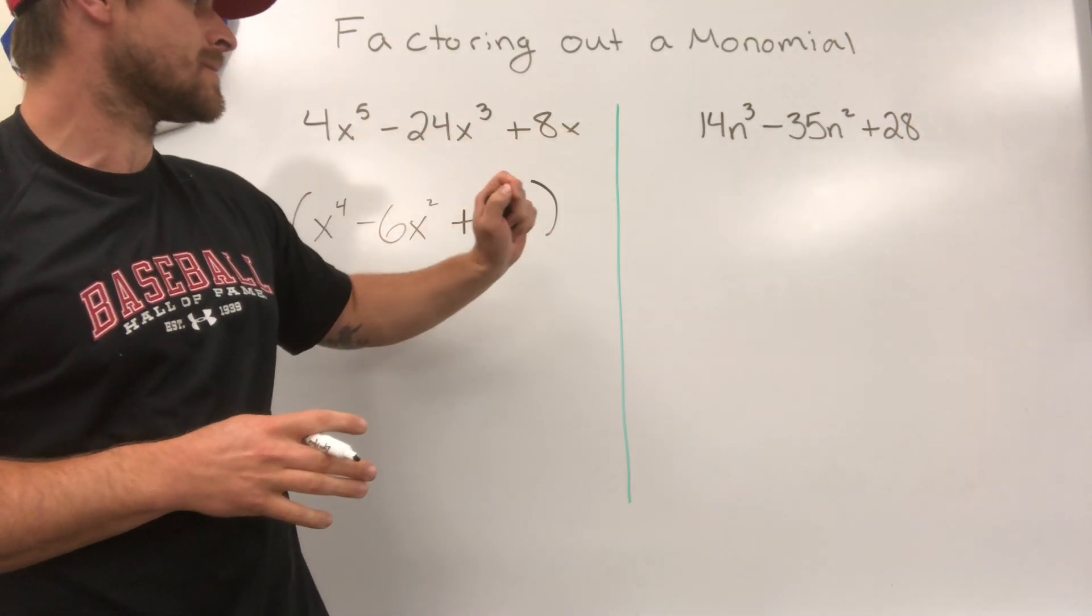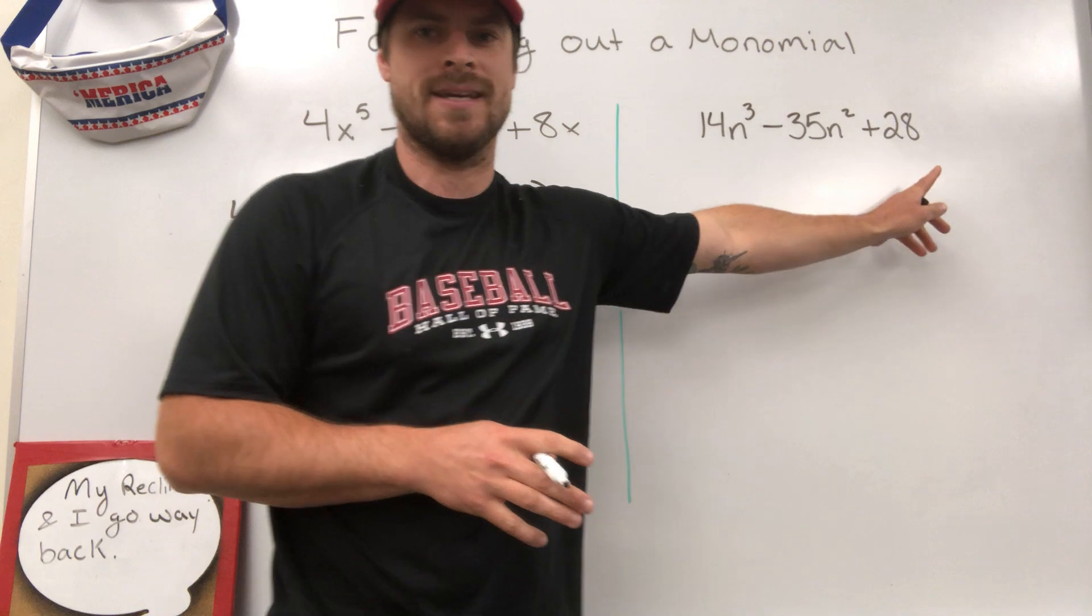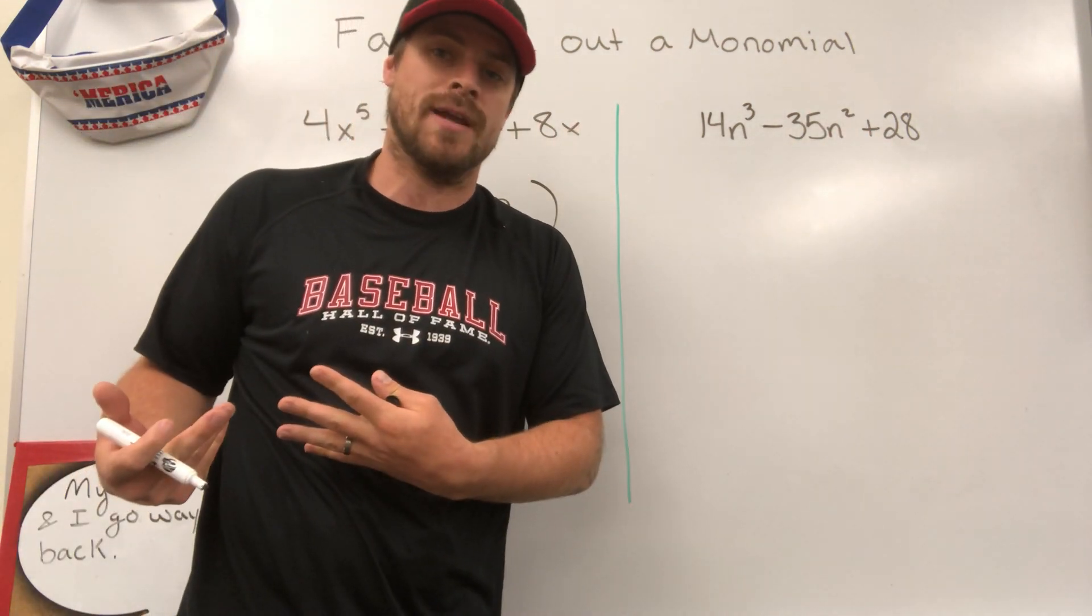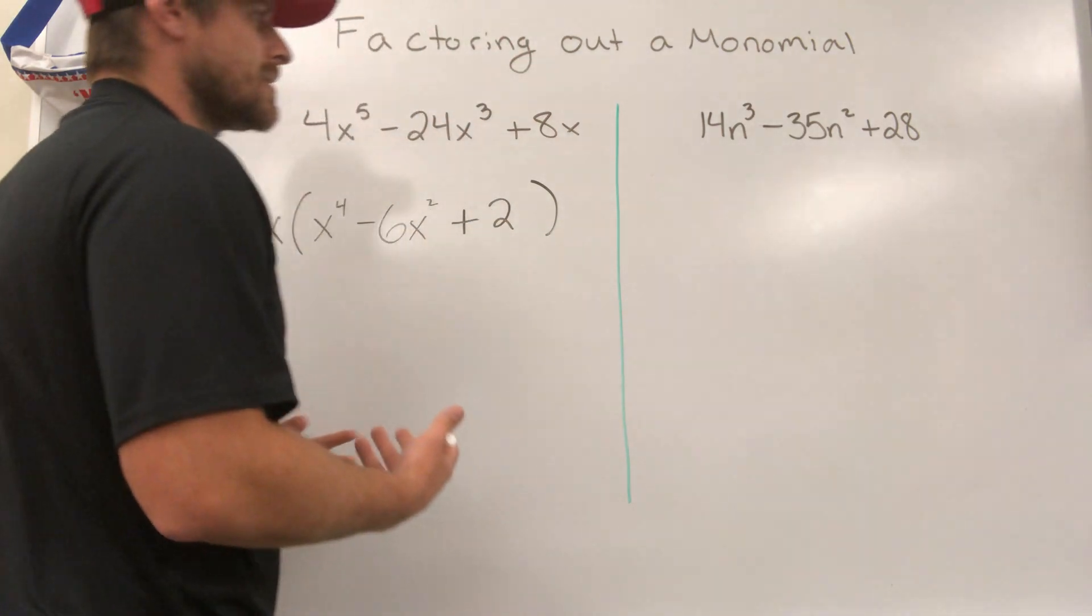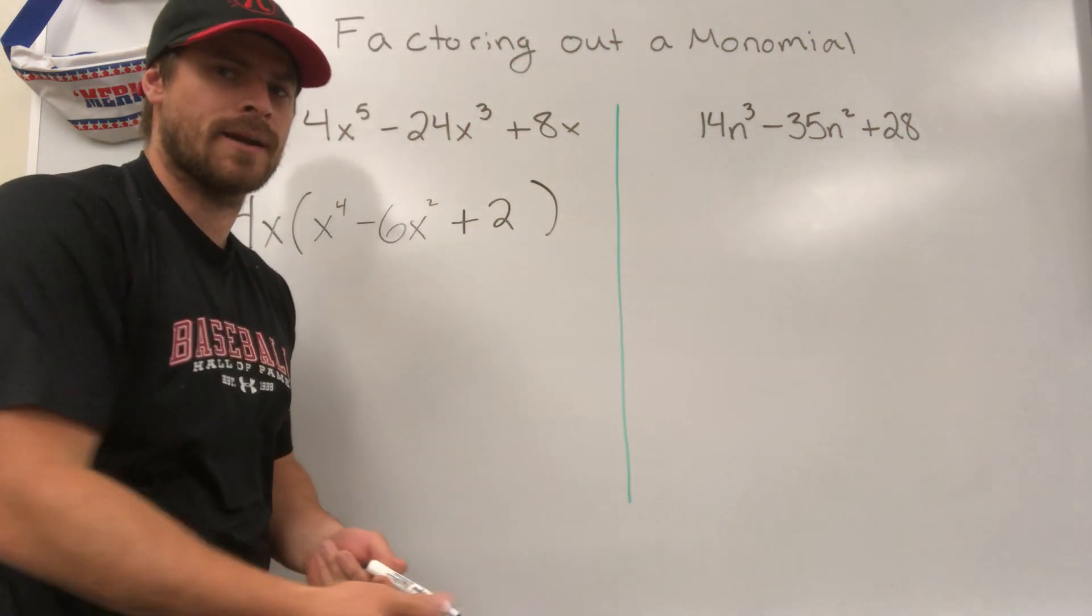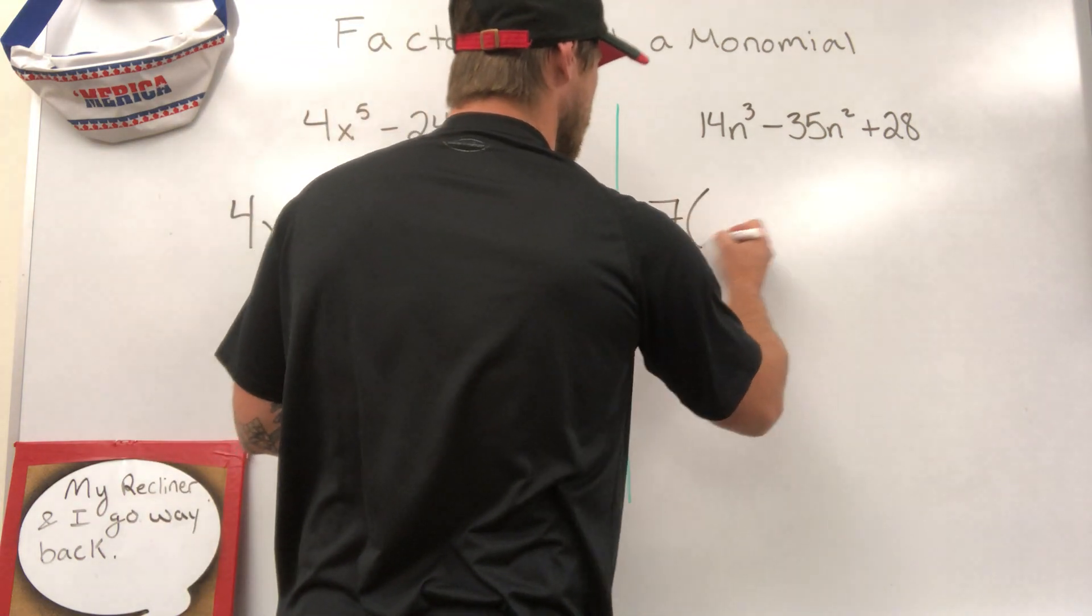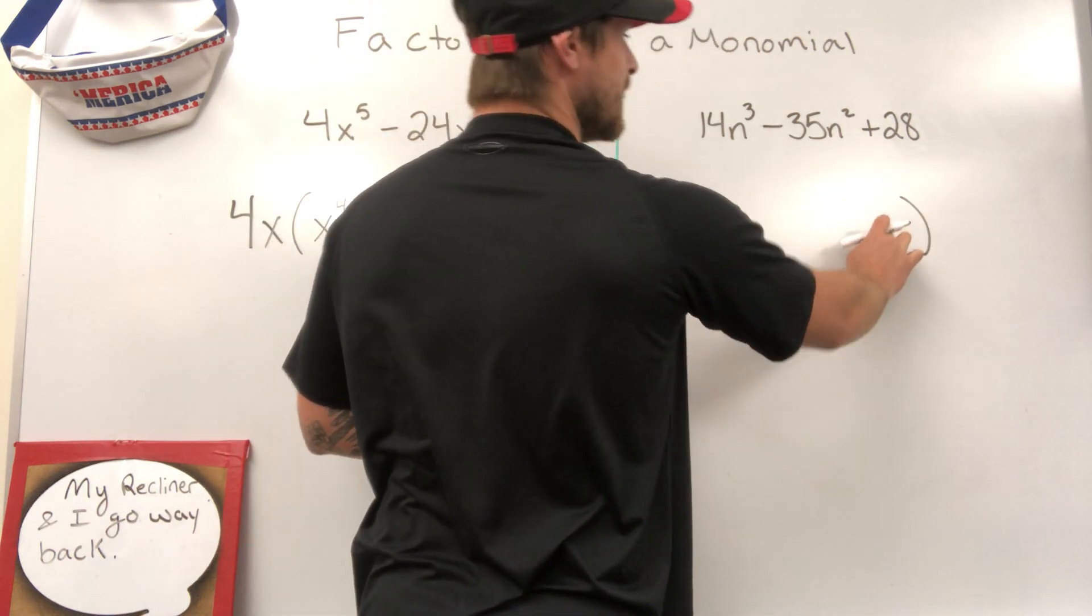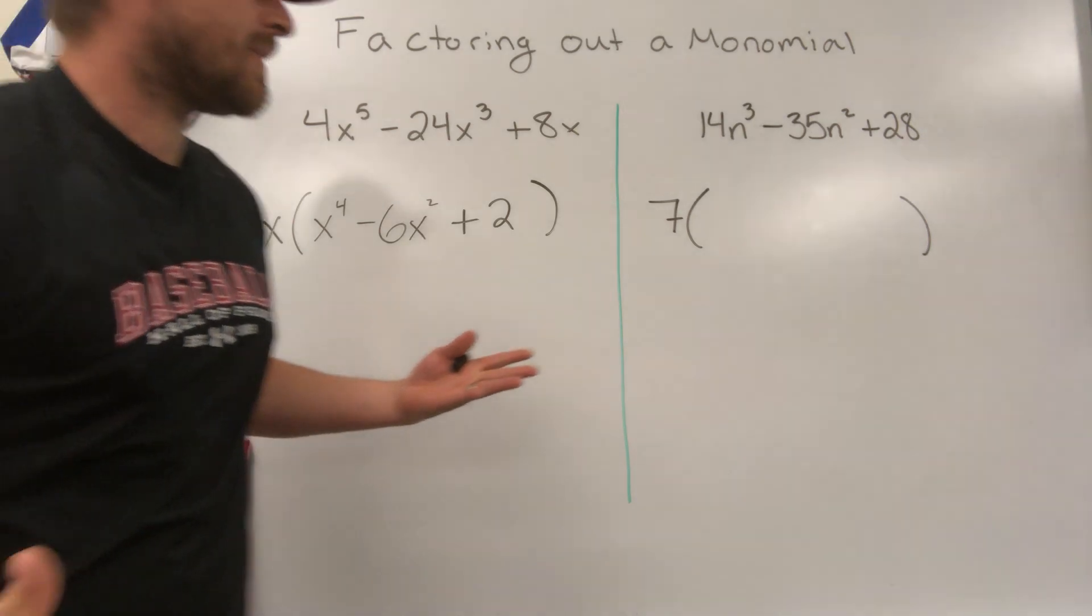Here, each of the terms had an x. Here we have an n, n, and we do not have an n on the end. So all we're going to really pull out, the monomial that we pull out of this trinomial is just going to be a basic number, just a constant. 14, 35, 28. It should almost stand out right away to you. What are they all divisible by? 7. We're not pulling out n because if we pulled out an n, we would be multiplying it by this last term and we would have an n attached. We don't have that in this case.